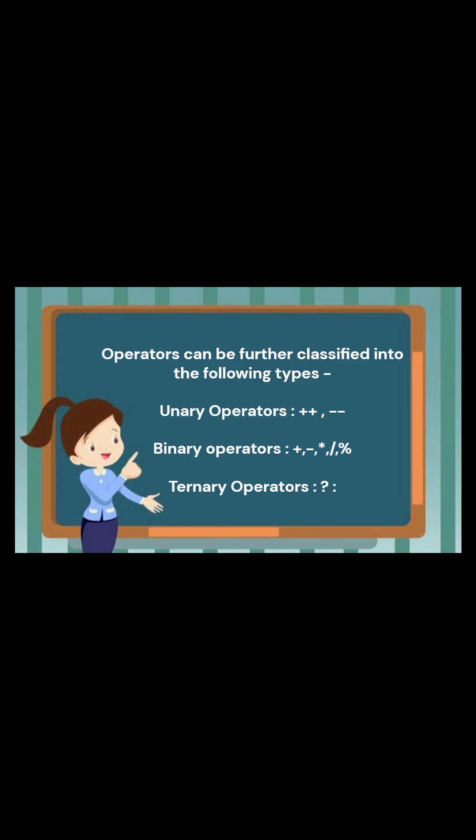Operators can be further classified into the following types: unary operators (plus plus, minus minus), binary operators (plus, minus, multiply, divide and modulus), and ternary operators (question mark and colon).